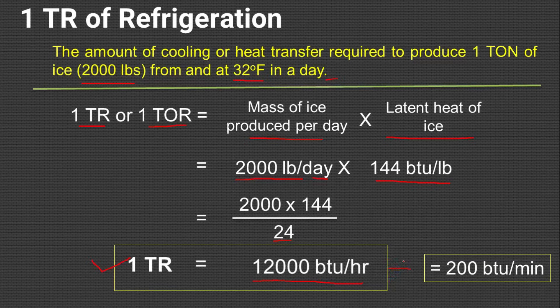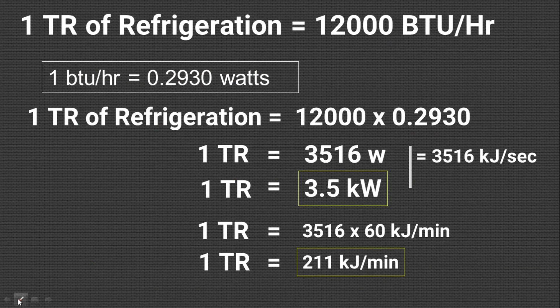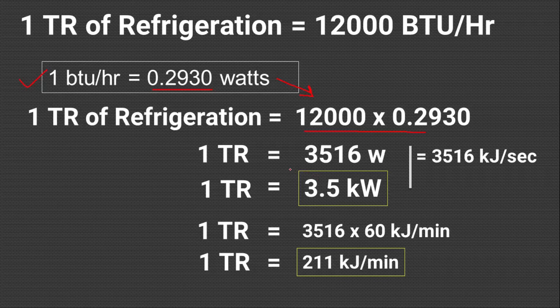To convert it into BTU per minute, we divide by 60 minutes, and it gives 200 BTU per minute, which is again a unit of 1TR itself. As we already know, 1 BTU per hour is equal to 0.2930 Watt. Hence we can convert 1TR into Watt or Kilowatt. So 1TR of refrigeration is 12,000 multiplied by the conversion factor 0.2930, which gives 1TR equal to 3,516 Watts. Hence, in short, 1TR is equal to 3.5 Kilowatts.